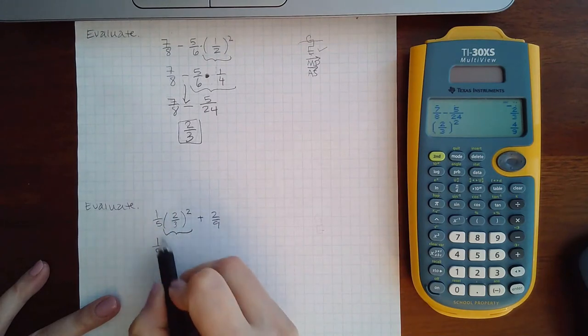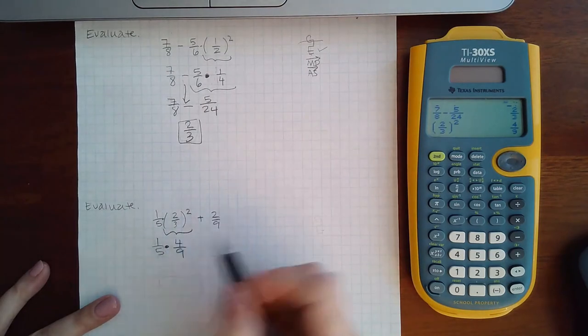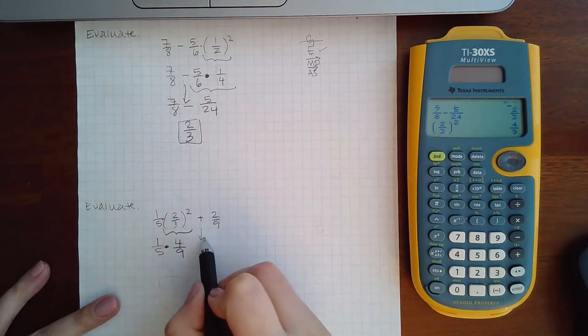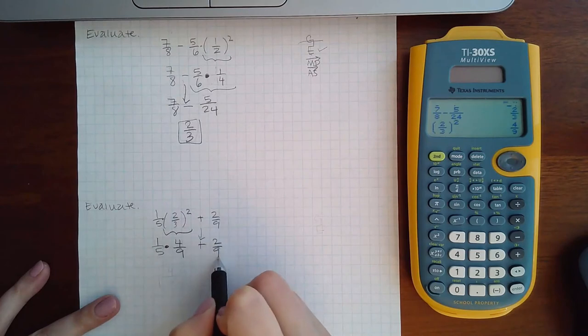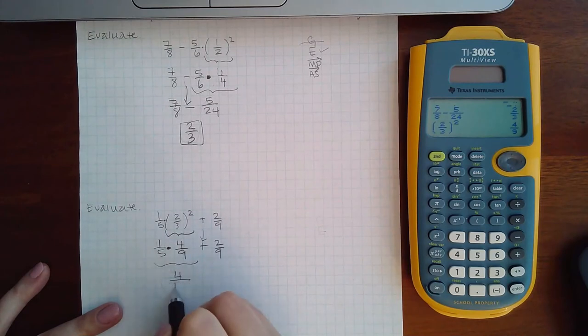Again a number right outside parentheses means there's a hidden times in there and I get four over nine. Bring down the plus two over nine. Then I need to multiply these together so I get four over 45.